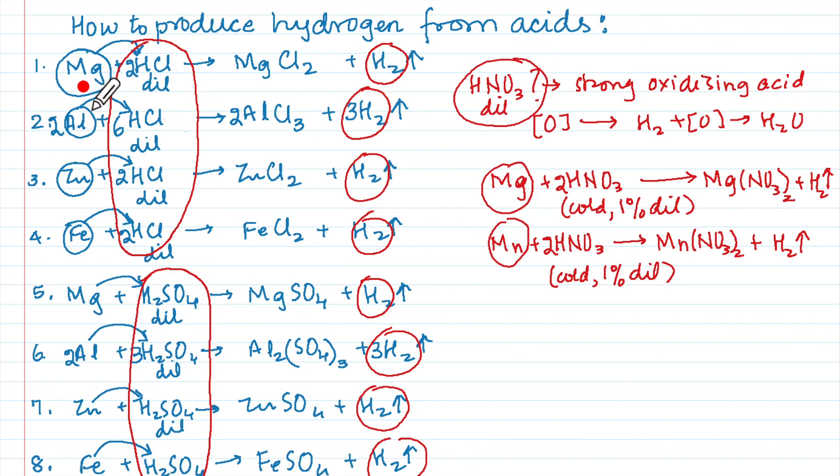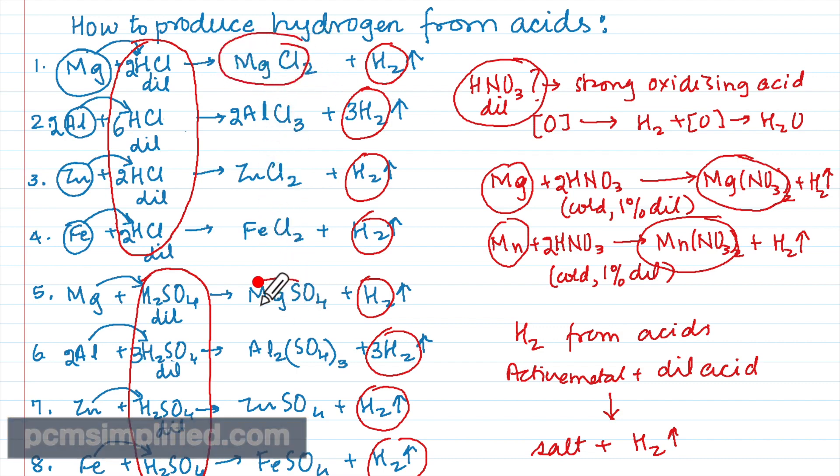This is how we will get hydrogen from acids and what we have to remember that active metal plus dilute acid is going to give us a salt and plus hydrogen gas. Which is the salt? Here it was a nitrate, here it was a nitrate, here it was a chloride everywhere and here it was sulfate everywhere. That is how we produce hydrogen from the acids. Hope we have understood these reactions, thank you for watching.